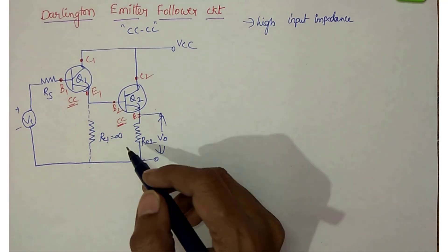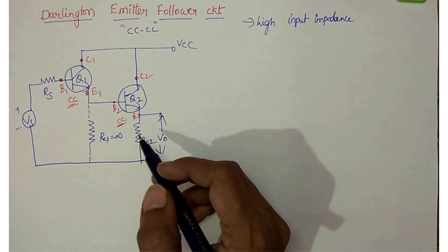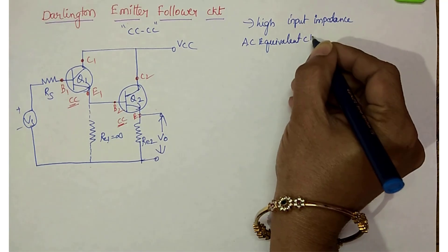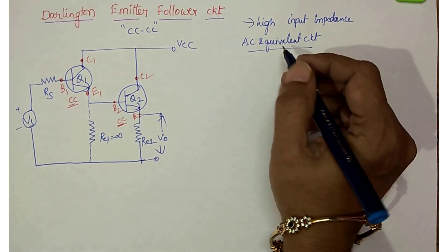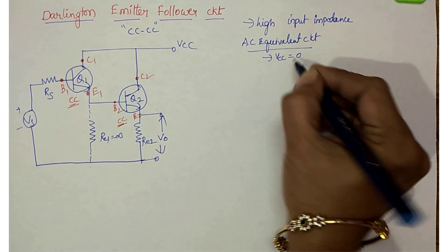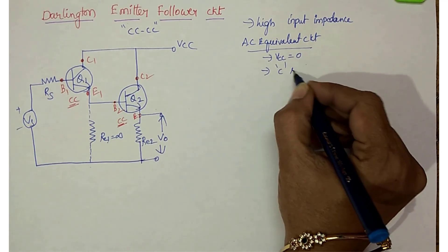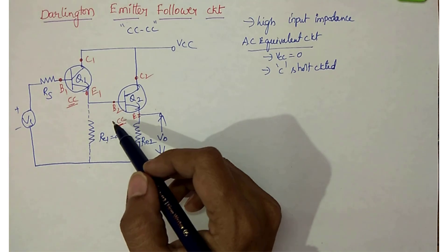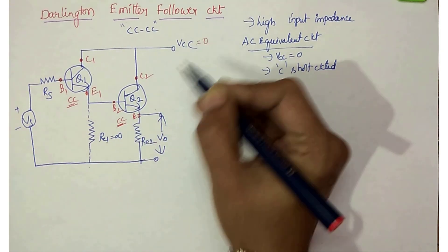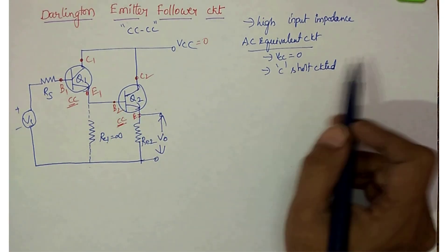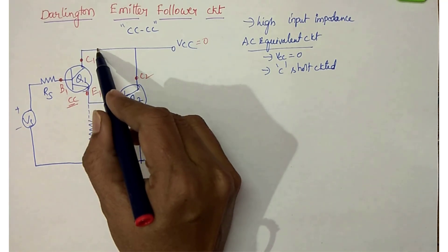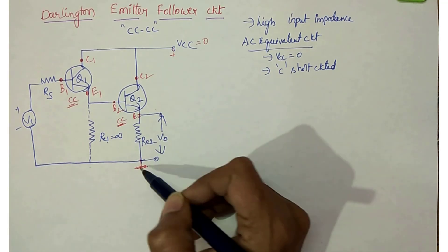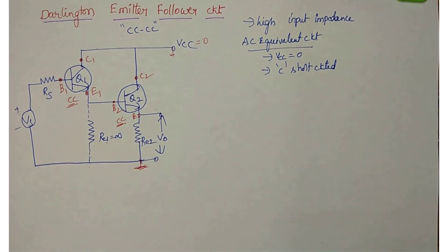Now to analyze this Darlington emitter follower, the first step is to draw the AC equivalent circuit. To draw the AC equivalent circuit we follow two things: first, make VCC equal to zero, and second, all capacitors are short circuited. Since VCC is zero, the collector is grounded. We take C1 and C2 both to ground.